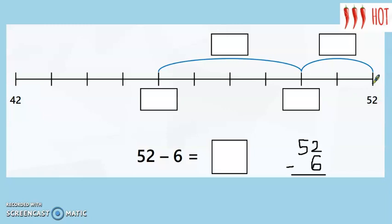So when I'm jumping back, the first jump is going to be 2 jumps long and that will take me back to 50 because it takes off the 2 ones. The 5 tens doesn't change, but if I take off the 2 ones it will change to 0 ones. Have I taken away 6 yet? No. I've taken away 2.